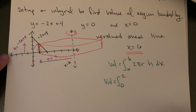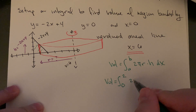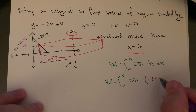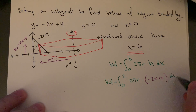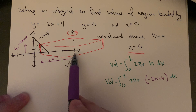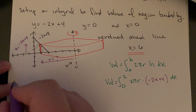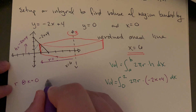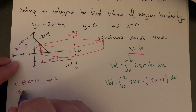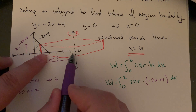The height of all these shells syncs up with our curve — the height is just negative 2x plus 4. That part is standard. Now let's fill in the information: 2 pi times the radius times the height, which is negative 2x plus 4, with respect to x. To figure out the radius: if x equals 0, the radius is the distance from 0 to 6, which is 6. At x equals 2, the distance from 2 to 6 is 4.